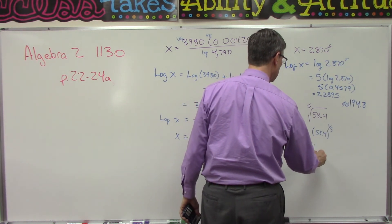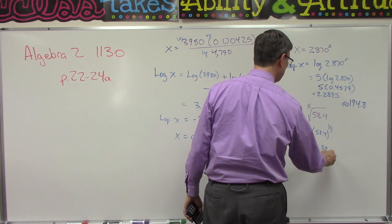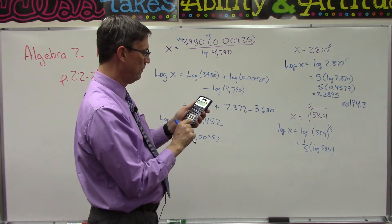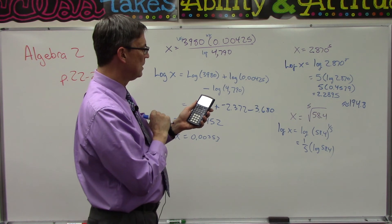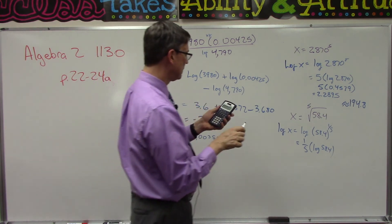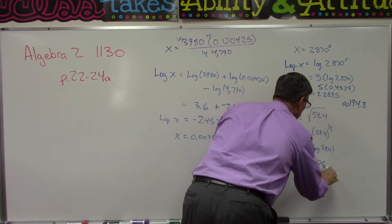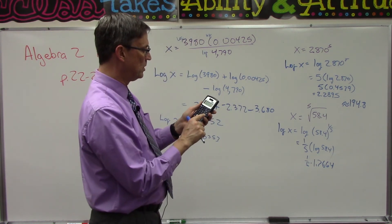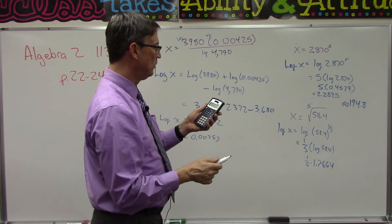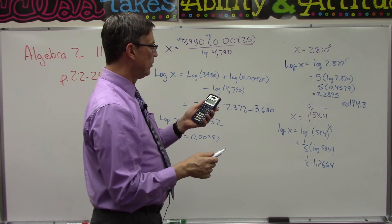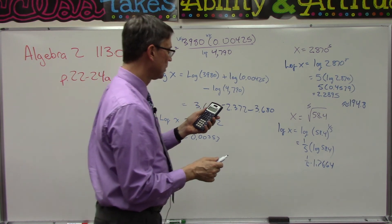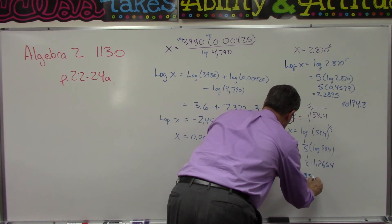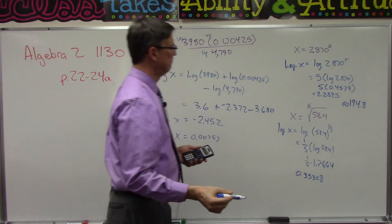Follow with me, do the calculator. Log of 58.4, hit equals—so you should have 1.7664. And we're doing one-fifth times that, so the easiest way to do that is just divide that answer by 5, and we get 0.35328.